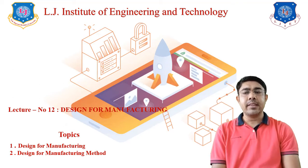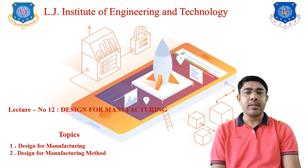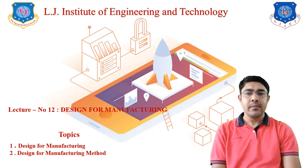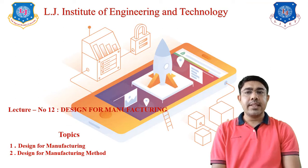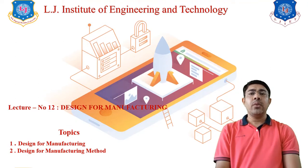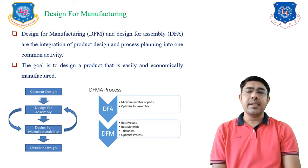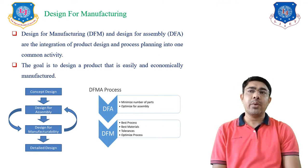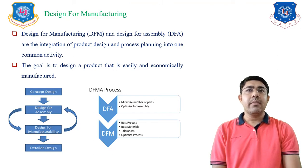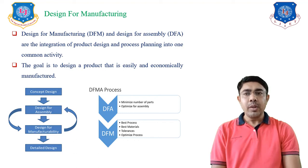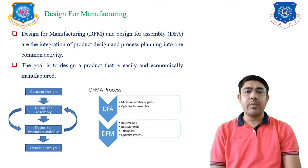First we learn Design for Manufacturing concepts and then we learn the Design for Manufacturing method. Before we start Design for Manufacturing, I should mention that in Machine Design you learn design for strength, design for stiffness, etc. But you never learn Design for Manufacturing and Design for Assemblies.